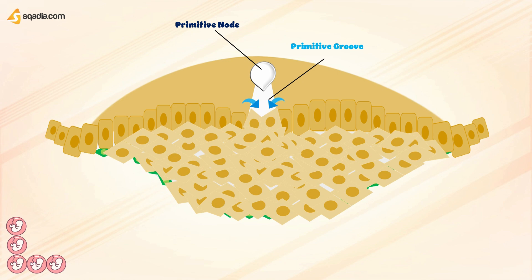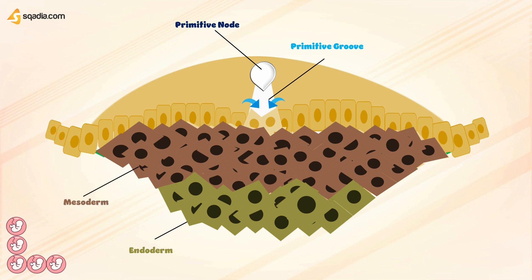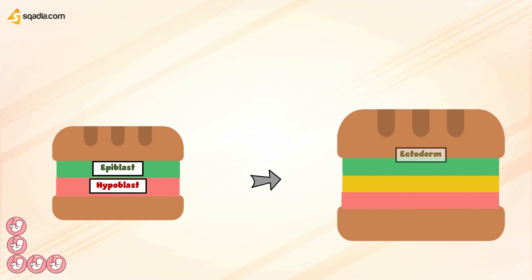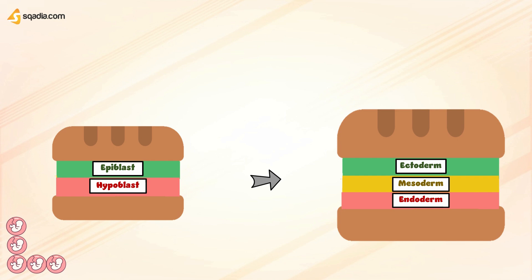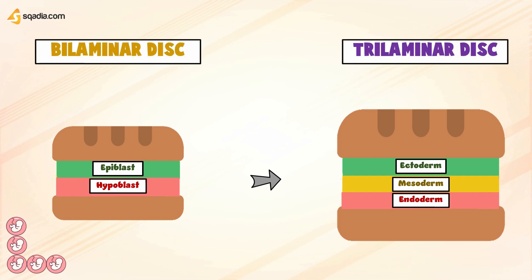Let me give different colors to them so they become more visible. This is endoderm. Between the endoderm and ectoderm there is mesoderm. And this is ectoderm. Wow — magic! This is really a magic. Two layers — the epiblast and hypoblast — convert to three layers: ectoderm, mesoderm, and endoderm. It means the bilaminar disc converts to a trilaminar disc.